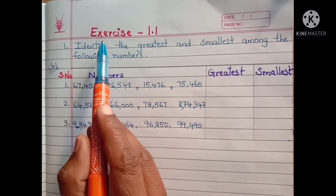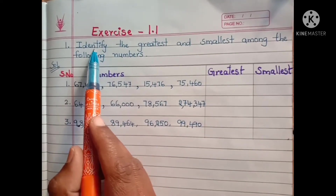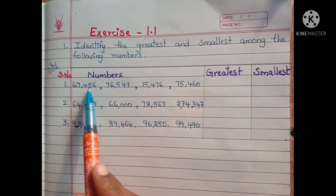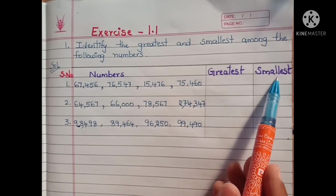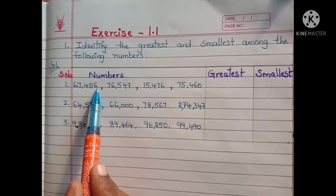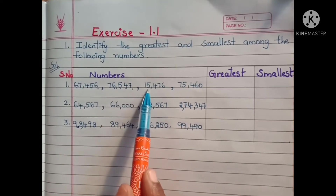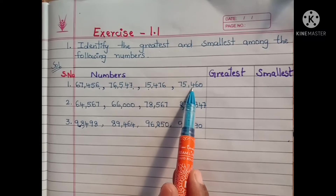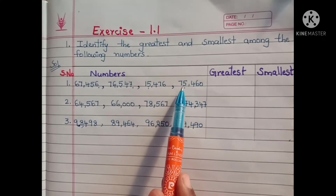Welcome to our channel. Today's topic is Chapter 1, Exercise 1.1. In the first problem, we have to identify the greatest number and the smallest among the following numbers. Four numbers are given: 67,456; 76,547; 15,476; and 75,460. We have to find which one is the greatest and which one is the smallest.